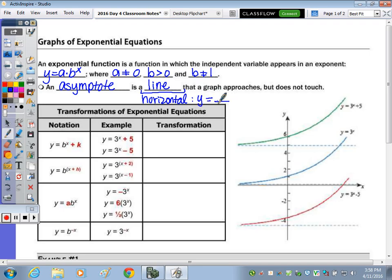For the transformations, I have an example to the right for y equals 3 to the x, and then you can see here is y equals 3 to the x plus 5 versus y equals 3 to the x minus 5. You can see this is a shift up 1, 2, 3, 4, 5 units and then here 1, 2, 3, 4, 5 units down. So the transformation is a shift up 5 units and this is a shift down 5.